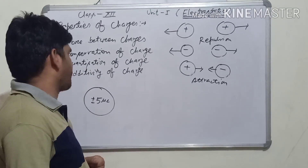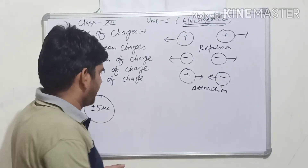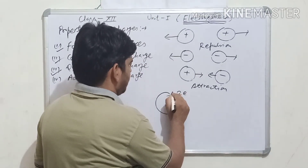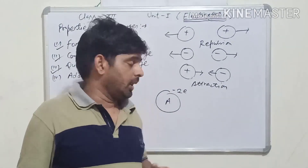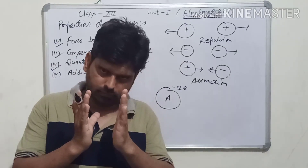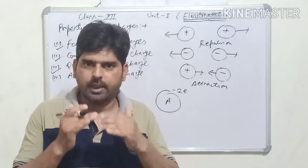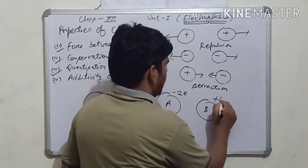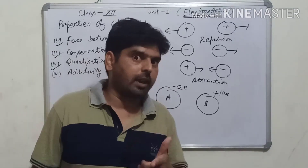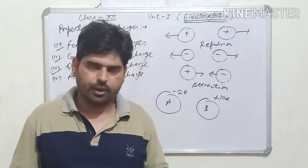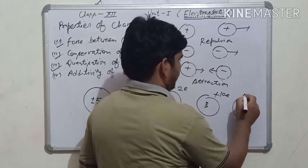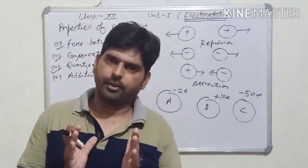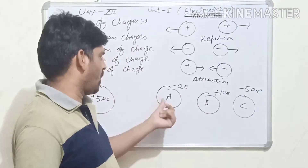Now we will discuss quantization of charge. Suppose a body A has a charge of minus 2e, meaning this body receives 2 electrons — whatever body receives electrons it becomes negatively charged. Body B has a charge of plus 10e, meaning 10 electrons are donated by this body. Body C receives 50 electrons. Now what will be the charges on A, B, and C? For body A it will be minus 2e, and for body C it will be minus 50e.